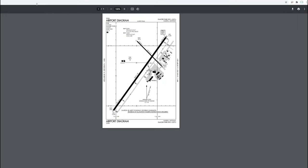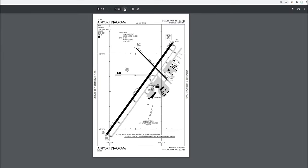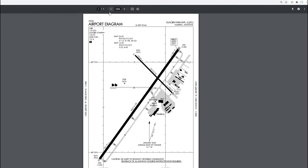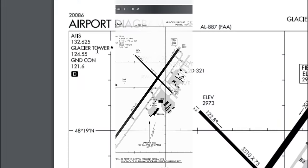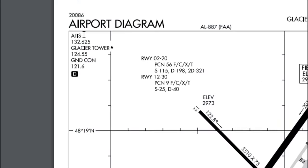Here's the Glacier Park International airport diagram. We're coming in on runway 02, approaching from the north. Tower will likely give us a left downwind for runway 02 — we'll come down, make our base leg, and land. The airport diagram also gives us our ATIS information at the top and the tower frequency we'll need to establish two-way radio communication.